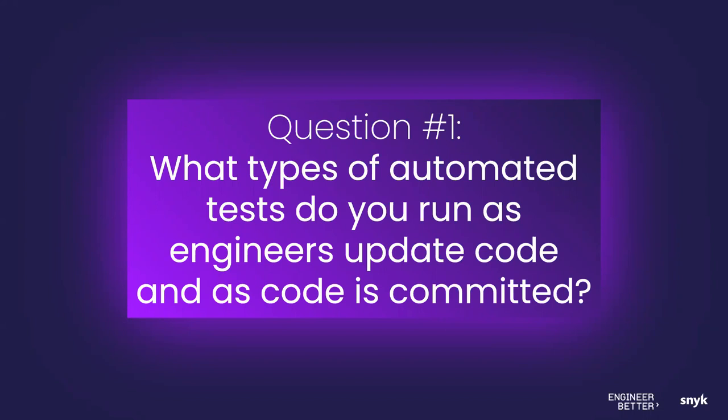The poll results are pretty interesting — basically a split between two options. There's a little bit for everything, but a split between 'we're not doing much automated testing yet' and linters and some of those early feedback-type checks. For the more full-featured security checks and policy tools, usage is relatively low. I don't think that's a different answer than we'd get if we had 5,000 people here — it's probably fairly consistent in terms of percentages.